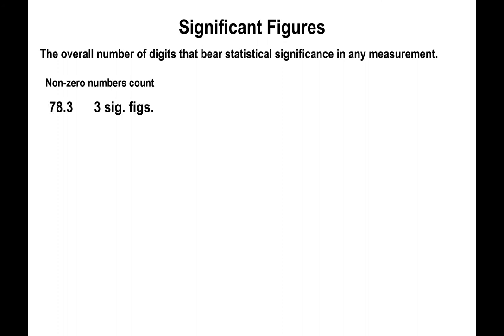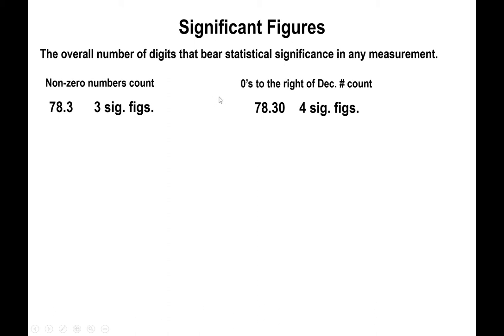First I need to discuss what counts as a significant number. Any digit other than zero, if it's written out, counts as significant. So a number with 7, 8, and 3 has three significant figures. Also, if zeros are present in a number where a decimal point is present and the zeros are to the right of any non-zero number, those zeros count. So 7, 8, 3, and that zero are all significant.